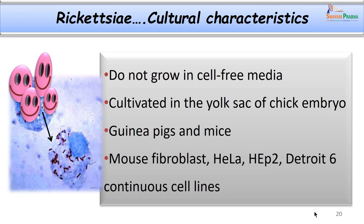Regarding cultural properties: as they are obligate intracellular parasites, they do not grow outside cells. They can be cultivated on the yolk sac of chick embryo. We can also use guinea pigs and mice — these are used as diagnostic tests to demonstrate a positive tunica reaction or Neil Muser's reaction. We can also grow them on cell lines such as mouse fibroblast cell lines, HeLa cell line, and Hep-2 cell line.